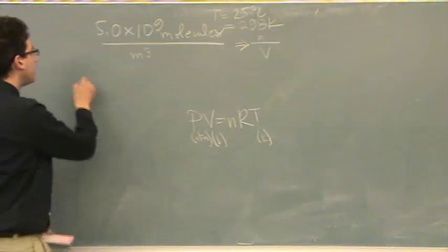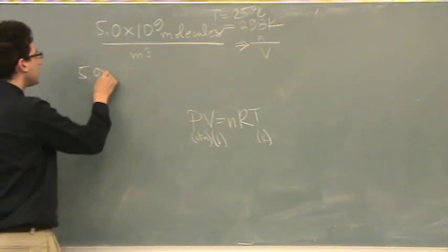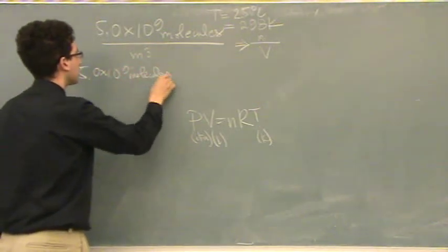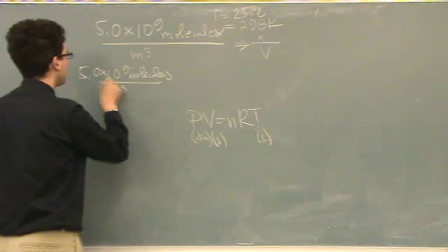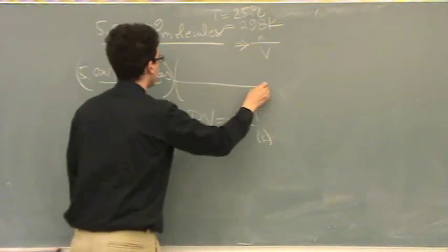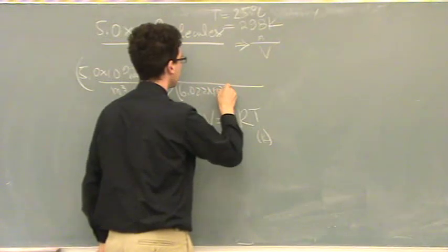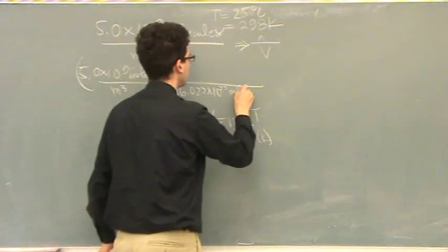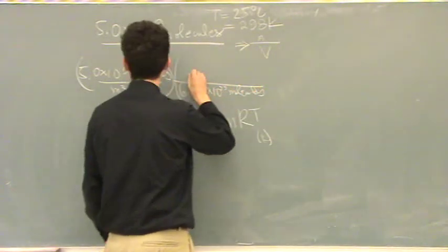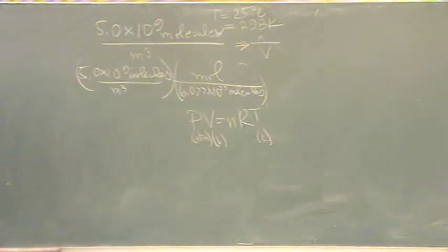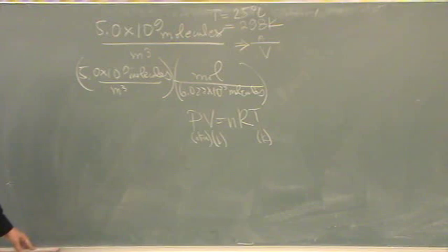The molecules per mole, I'm going to go 5.0 times 10 to the 9 molecules per meter cubed and convert that 6.02 times 10 to the 23rd molecules per mole. That's Avogadro's number. And then I'm going to change the meter cubed.